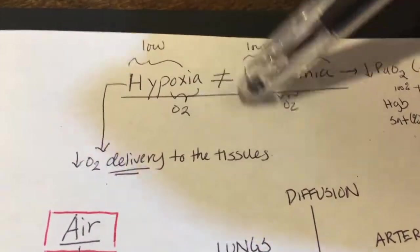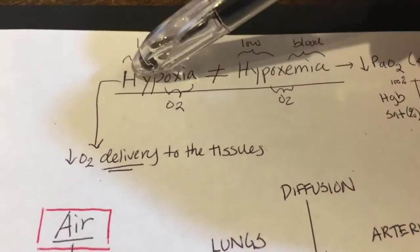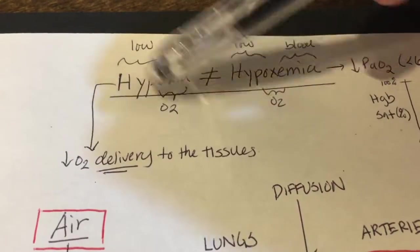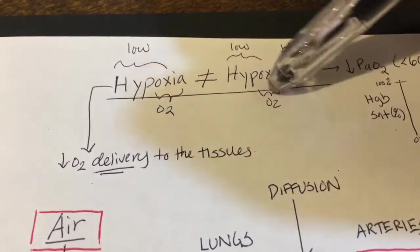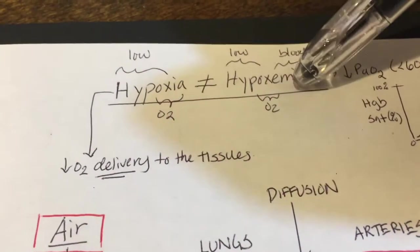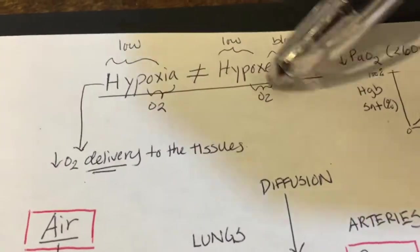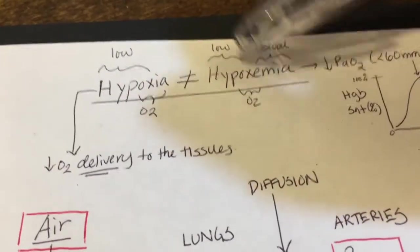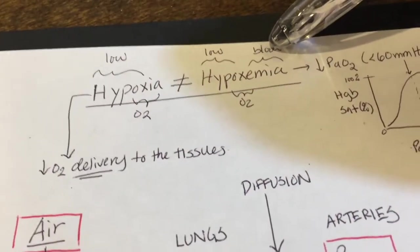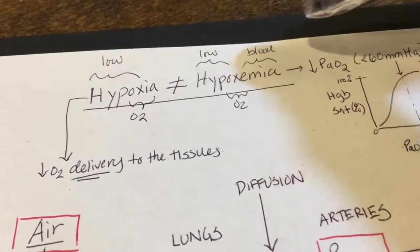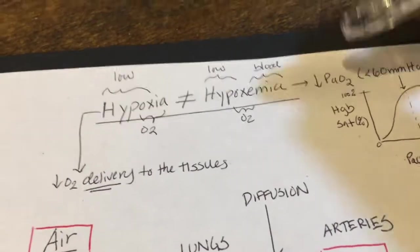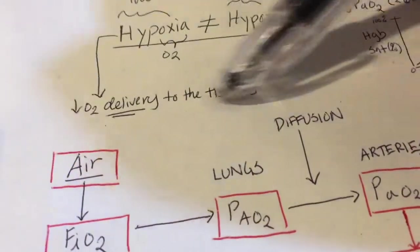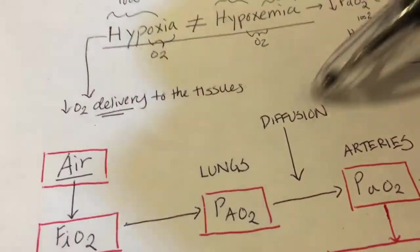Looking at the words: 'hypo' means low, and 'ox' means oxygen — so both terms involve low oxygen. The key difference is the suffix 'emia,' which means blood, like in anemia. So hypoxemia refers to low oxygen in the blood — specifically a low partial pressure of oxygen in the blood — whereas hypoxia refers to low O2 delivery to the actual tissues themselves. This is an important distinction to make right off the bat.